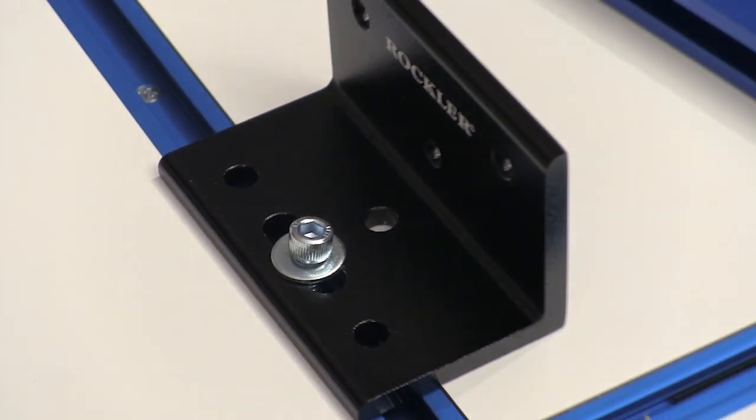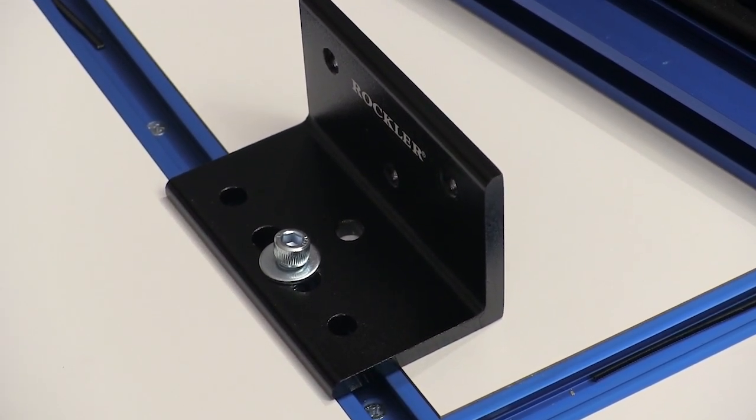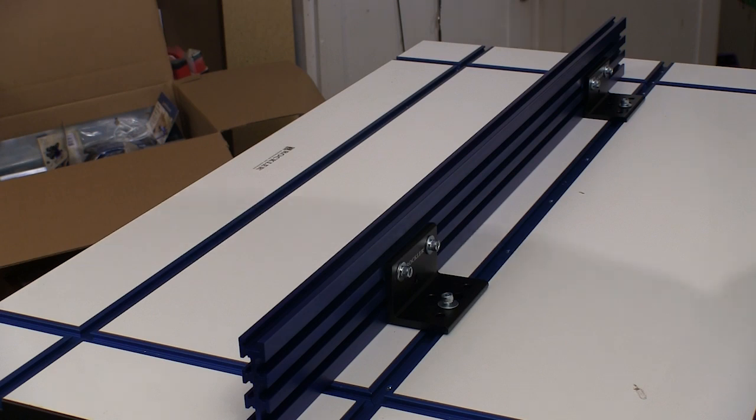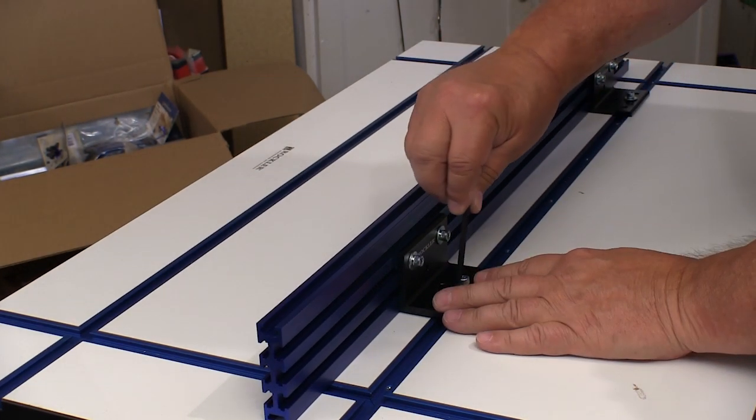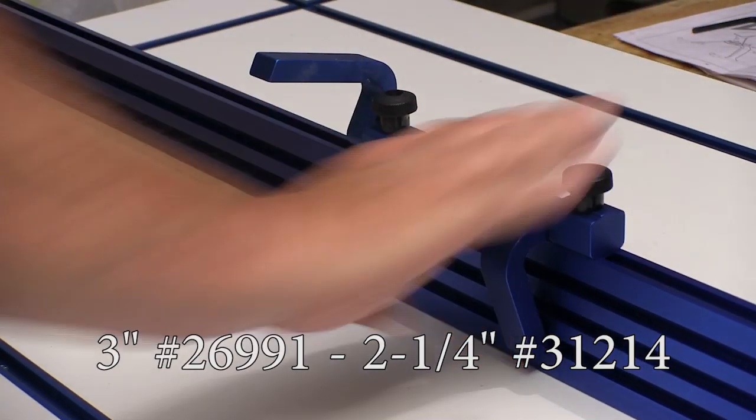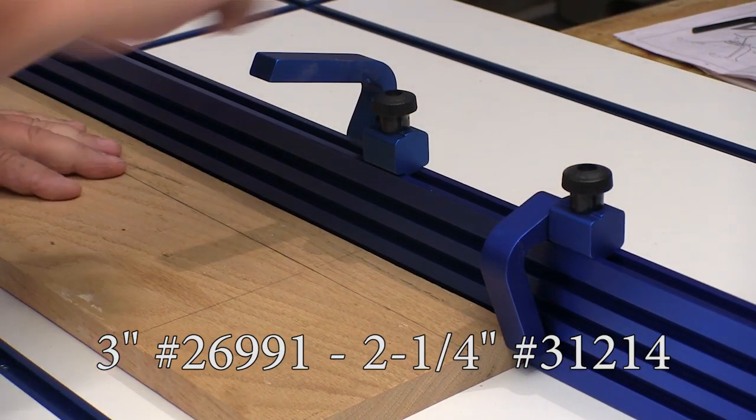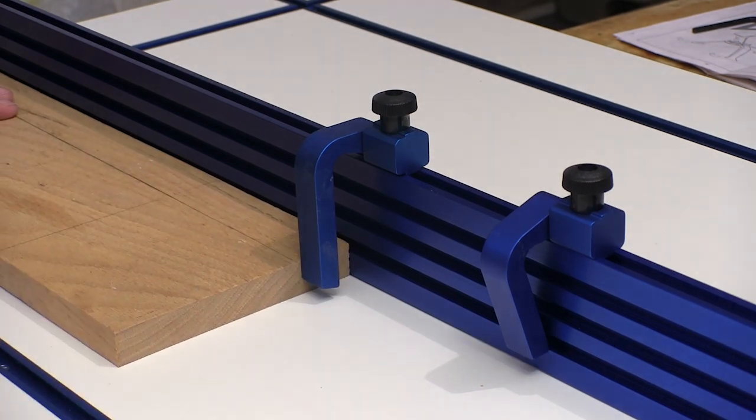The hardware and the bracket work just as well in the T-tracks built into the table surface. With this system, you can make a very rigid fence and position it wherever you need. You can use multiple flip stops for only to have a job that needs different positions and you have to repeat it several times.